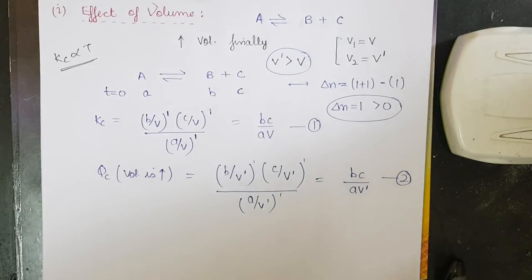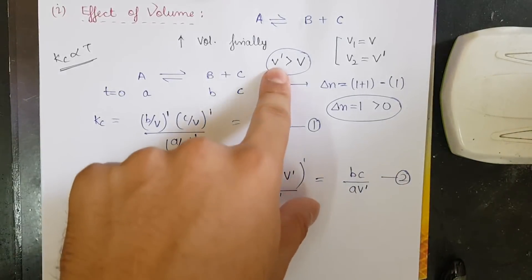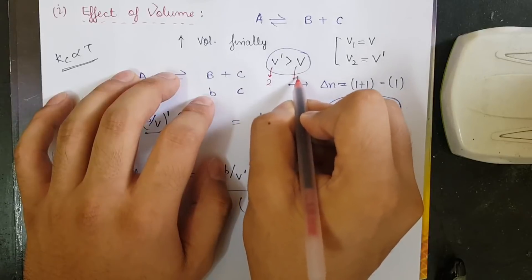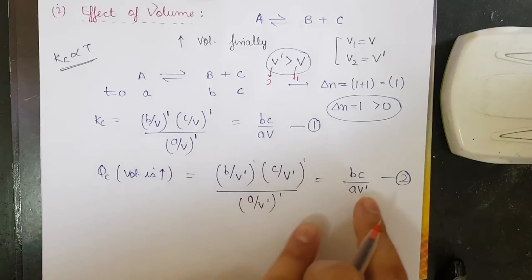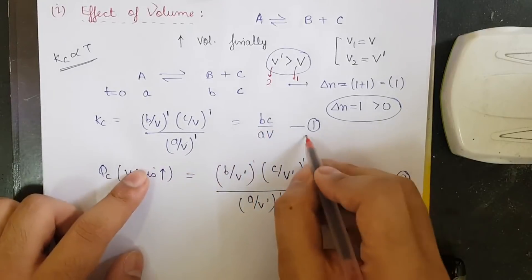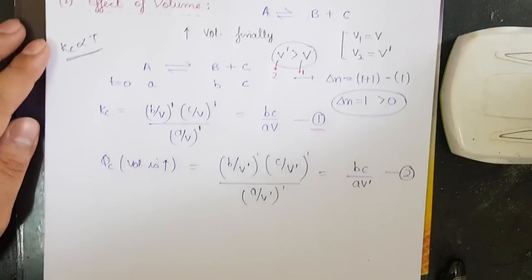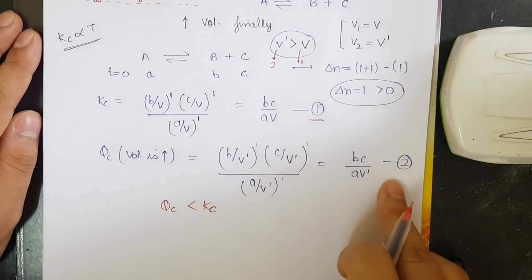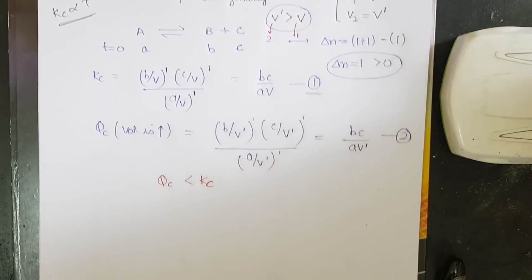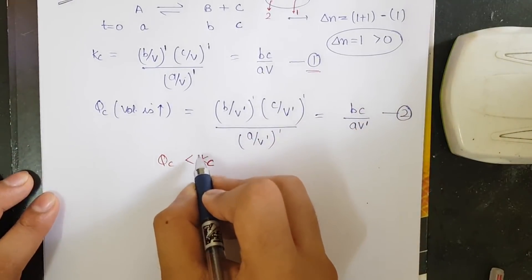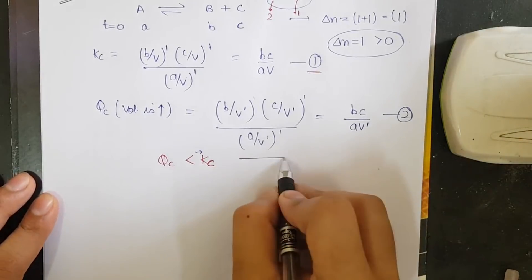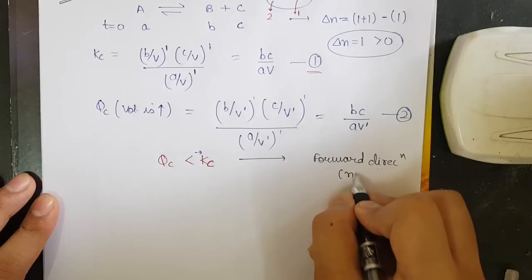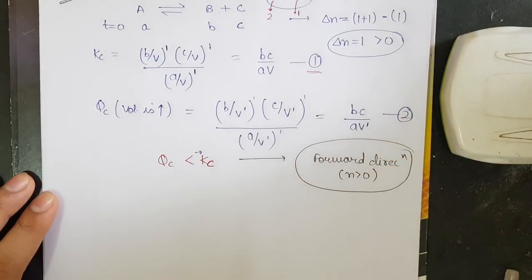Comparing equations one and two: since V' > V, if we take V' = 2 and V = 1, equation one gives BC/(A·1) and equation two gives BC/(A·2). Equation one is larger, so Qc < Kc. When Qc < Kc, the reaction moves in the forward direction. Therefore, when volume is increased and delta n > 0, the reaction moves forward.